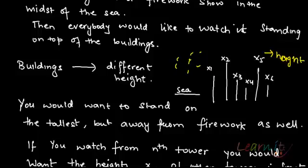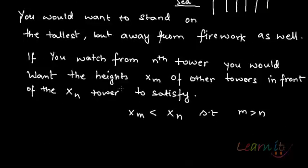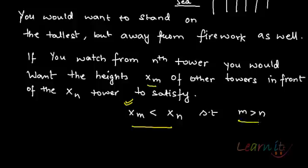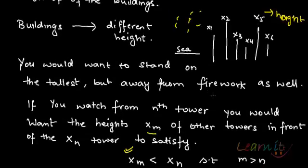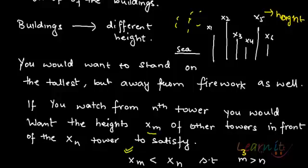If you watch from the Mth tower, you would want the heights of other towers in front of the Mth tower such that the height of any building in front of you is lower than your height, and the serial number of that building is greater than yours. This is just an example — now let us formally prove what we are trying to say.